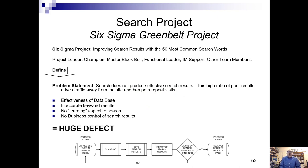The objective is improving search results with the 50 most common words searched on, for a Fortune 100 company. The problem statement is that search does not produce effective search results. This high ratio of poor results drives traffic away from the site and hampers repeat visitors to our website. The effectiveness of the database — inaccurate keyword results, no learning aspects to search, and no business control of the search results — equals a huge defect.